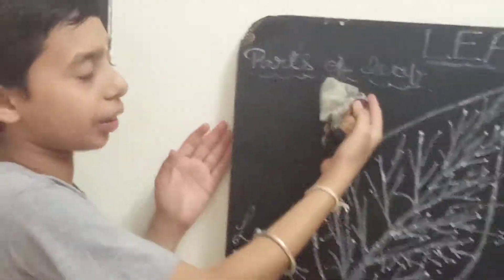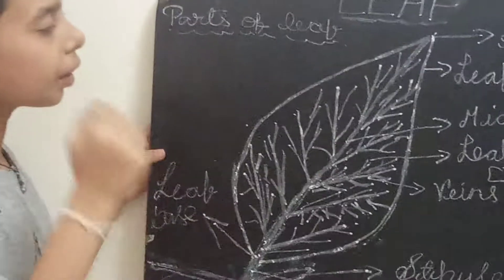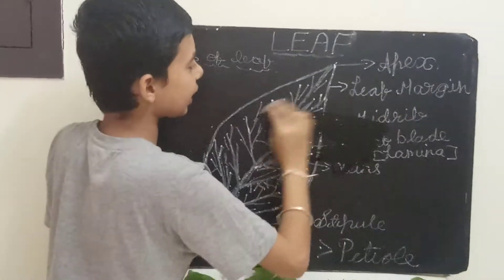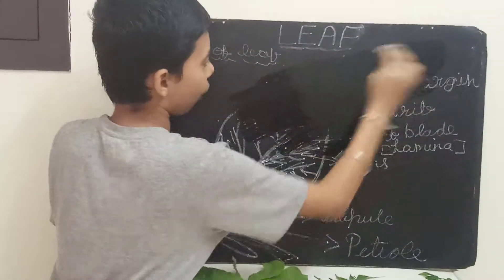We saw about the parts of leaf. Now let's see about the types of leaves.